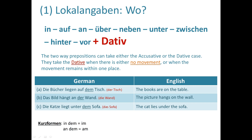We also have contracted or short forms: 'in dem' combines to 'im,' and 'an dem' becomes 'am.' This is part of German grammar — they use contractions to increase fluency. Saying 'im' instead of 'in dem' is more natural, so this is important to understand.